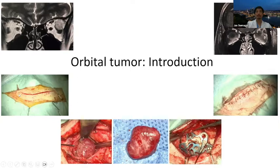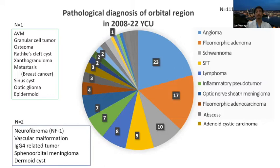Starting with orbital tumor introduction: this is the lateral approach. I sometimes use a three-centimeter eyelid incision using the lateral approach — the so-called Krönlein method. Angioma is very suitable for this approach. From 2008 to 2022 at Yokohama City University, there were 111 orbital tumor cases. Personally, I experienced over 80 orbital surgeries. The most frequent tumor is angioma, followed by pleomorphic adenoma, schwannoma, solitary fibrous tumor, lymphoma, inflammatory pseudotumor, optic nerve sheath meningioma, chromophobe adenoma or adenocarcinoma, orbital abscess, and adenocystic carcinoma.